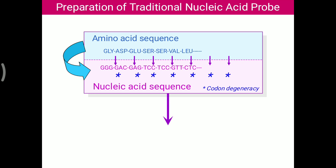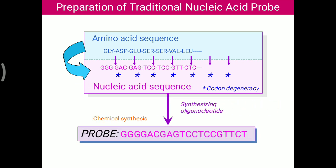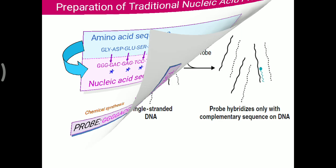Once the probe is designed, it is synthesized by chemical synthesis — producing an oligonucleotide chain. That probe can then be utilized for the detection of a particular gene. This is the preparation of a traditional nucleic acid probe based on the amino acid sequence of the target protein.